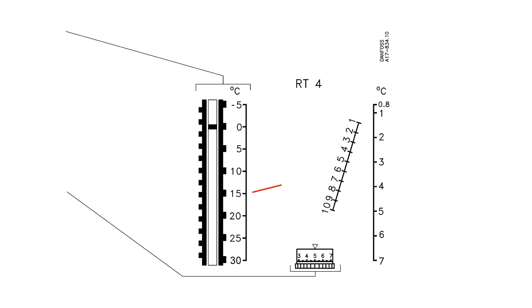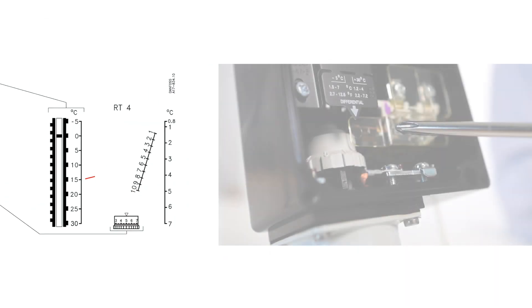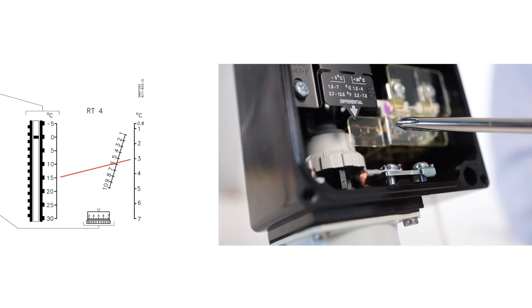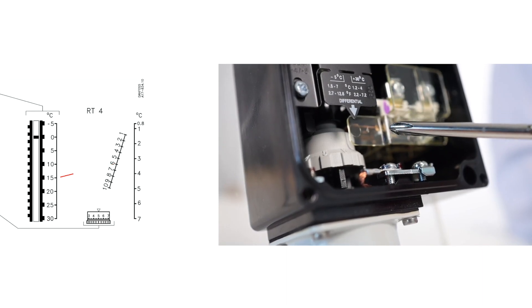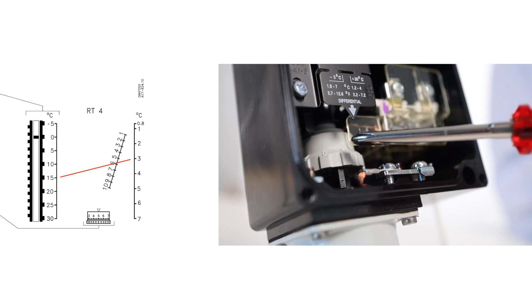In the instructions, you can find the table that shows which differential level corresponds to each setting level. If you, for example, need a differential temperature level of 3 degrees Celsius, you should adjust the setting to 6 with the setting nut.